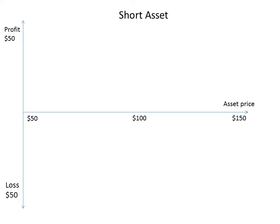This slide shows the risk-reward characteristics of a natural short — the roaster, miller, or oil refinery. Assuming the asset price is $100 today and it falls to $50, this benefits the natural short as they can acquire the asset at a lower cost. However, if the price rallies to $150, the natural short incurs an extra cost of $50 when they go to acquire the asset. So a natural short is hurt when market prices rise but benefits when the market falls.